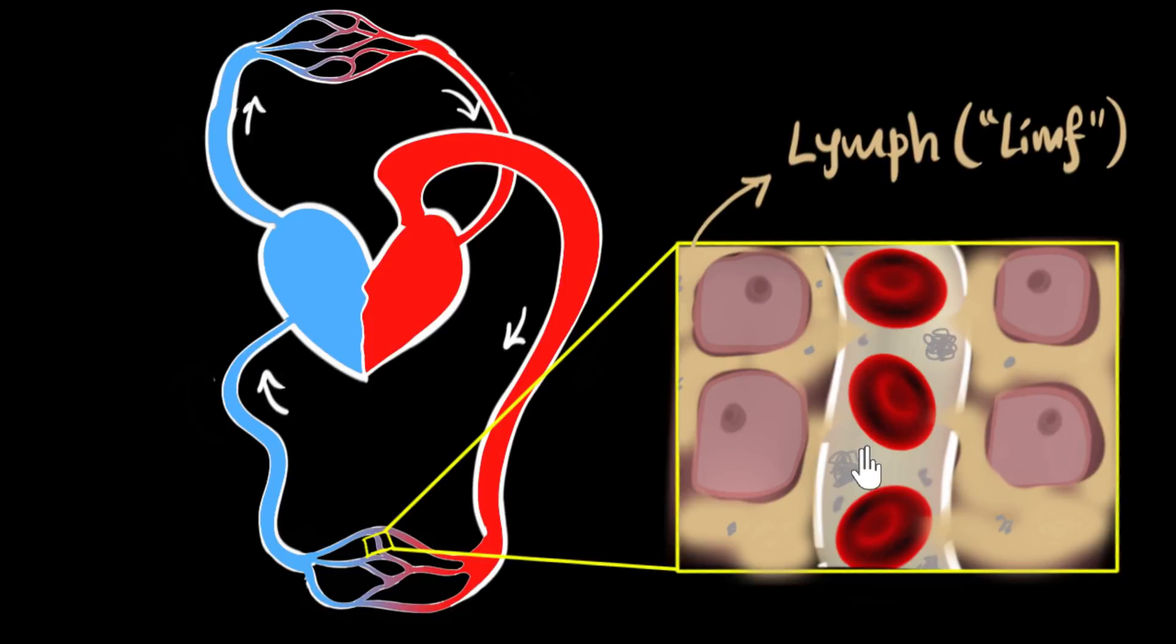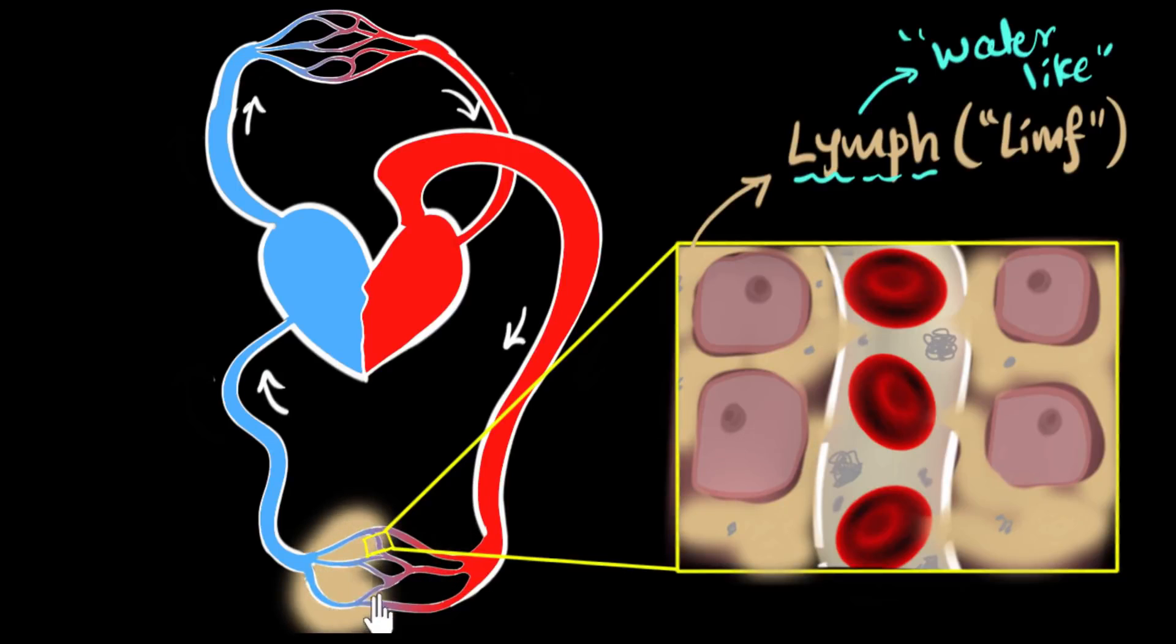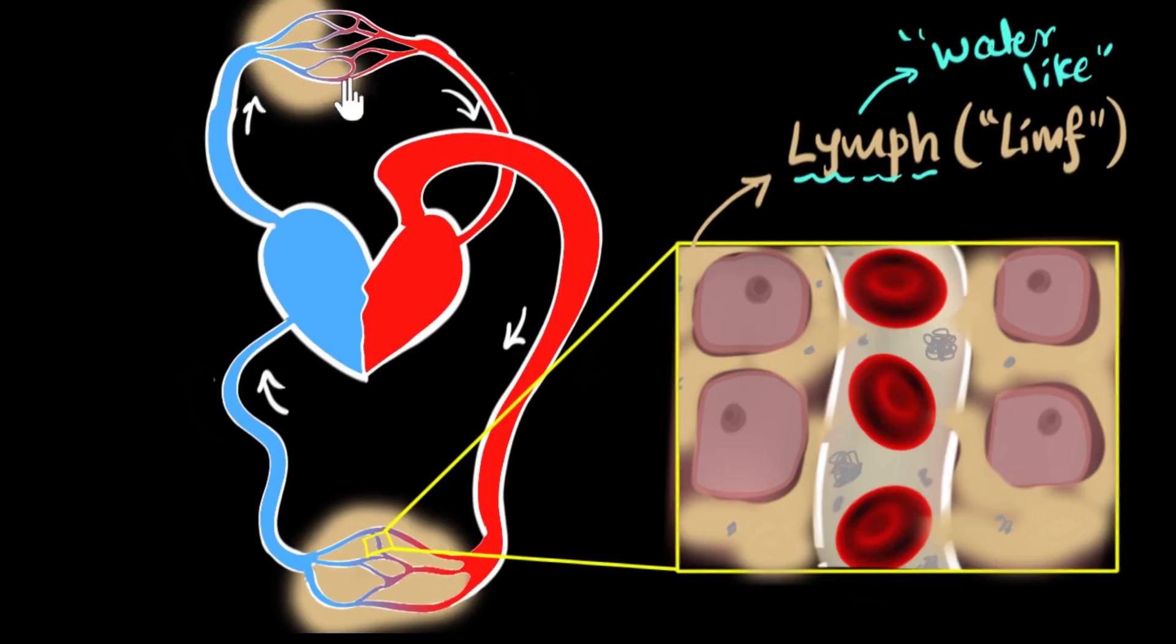So this plasma that oozes out and then fills up this space between the cells, this is what we call the lymph. And it's pronounced as lymph with an F. So how is lymph different than blood? Well, lymph does not have RBC in it, right? And as a result, lymph is pretty much colorless. In fact, the word lymph comes from the Latin, which means water-like. And why is it called water-like? Because it is pretty much colorless. And this means wherever these capillaries are present, the plasma will ooze out to form the lymph. And capillaries are found all over our body. So you will find this lymph pretty much everywhere inside your body.